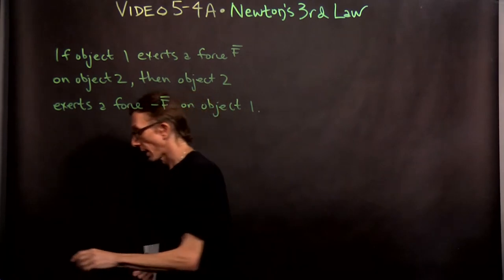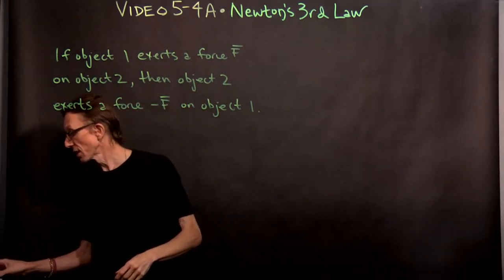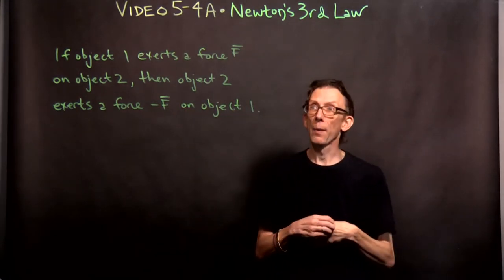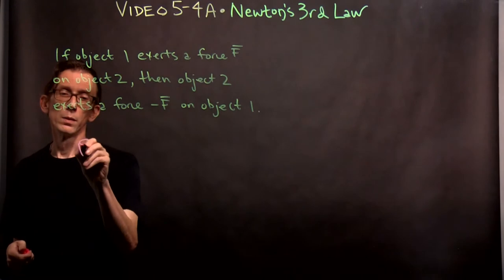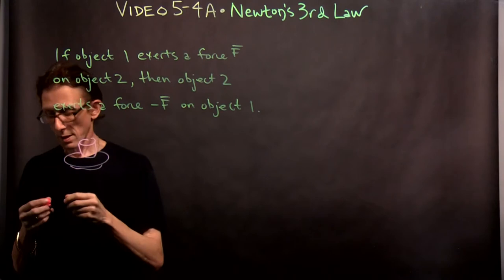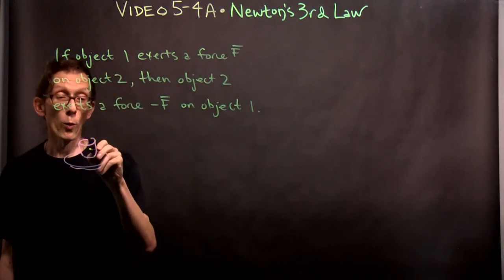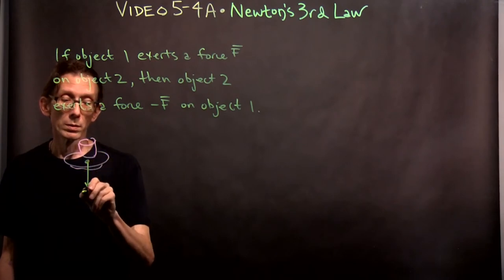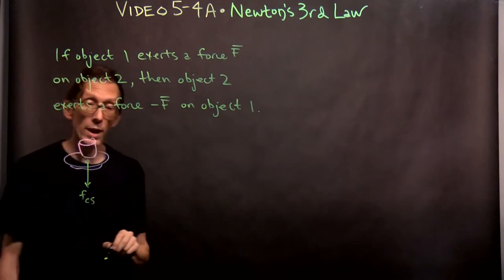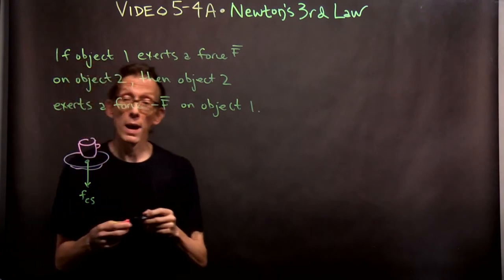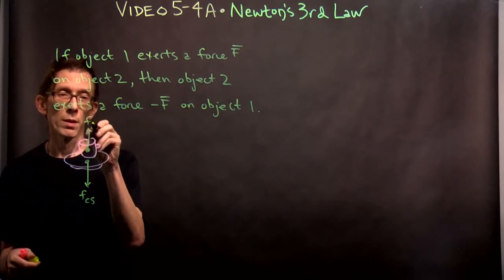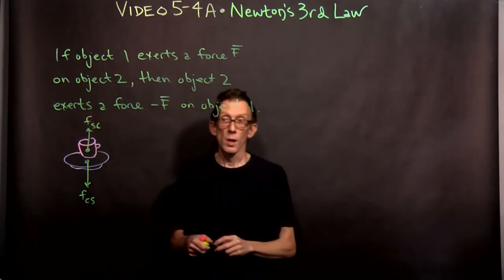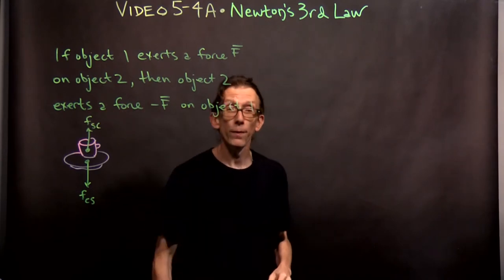That is Newton's Third Law. Please note that this is really general: anytime an object exerts a force on another object, there's an equal and opposite force. For example, suppose you've got a cup sitting on a saucer. There's a force of the cup on the saucer downward — the weight of the cup is felt by the saucer. But there's an equal and opposite force of the saucer on the cup. The force experienced by the saucer is equal and opposite to the force experienced by the cup.